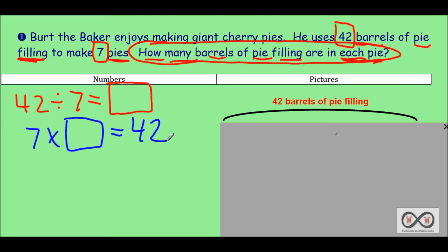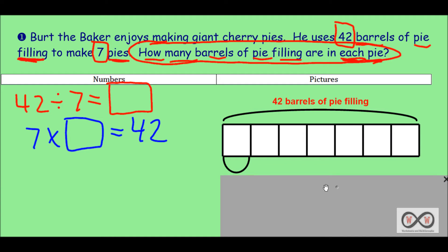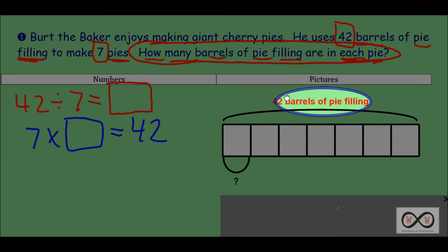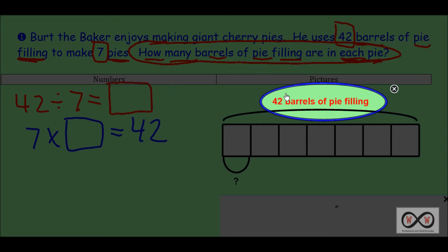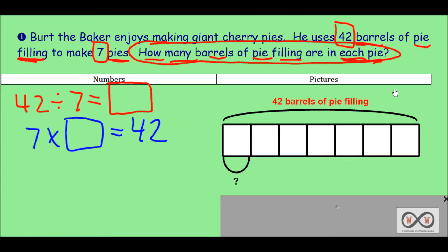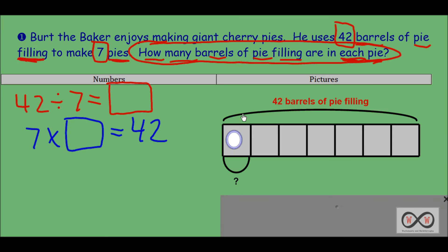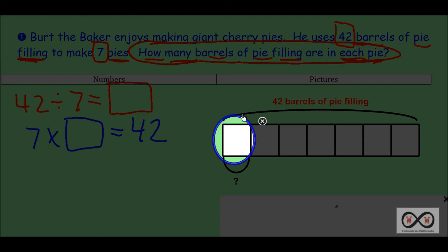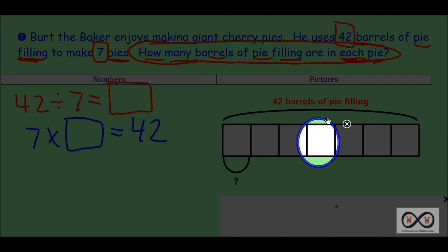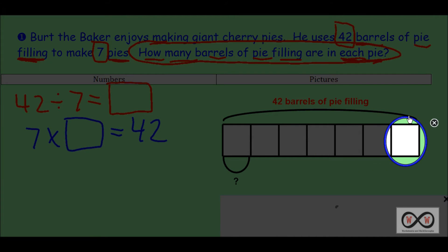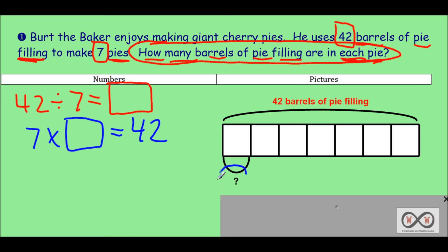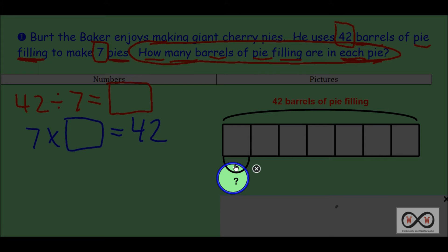Let's use this tape diagram or model drawing to solve this. We know we have 42 barrels of pie filling total. We also know that Bert the Baker uses those 42 barrels to make seven pies. Our unknown is here — we don't know how many barrels he uses in each pie.